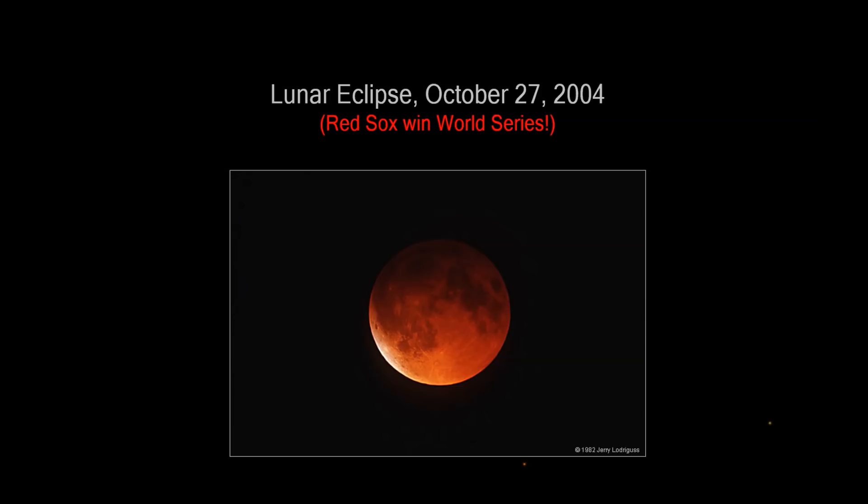Some light from the sun does pass through the earth's atmosphere and scatters to the moon. The light that passes through is typically red, which is why lunar eclipses appear dimly red, like this moon, on the night the Boston Red Sox won the World Series in 2004.